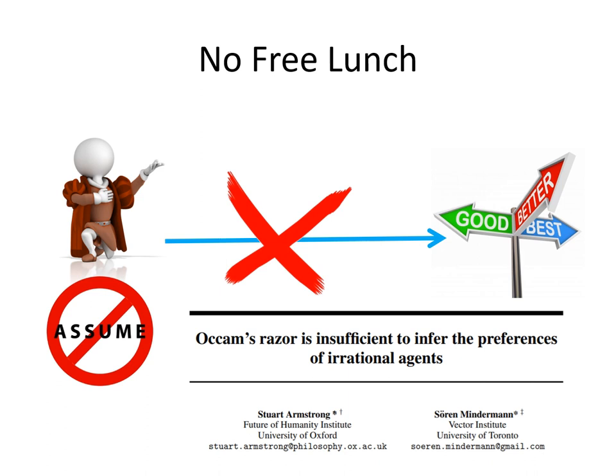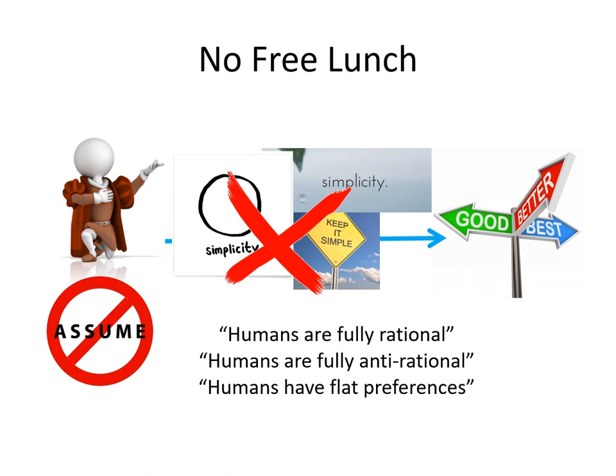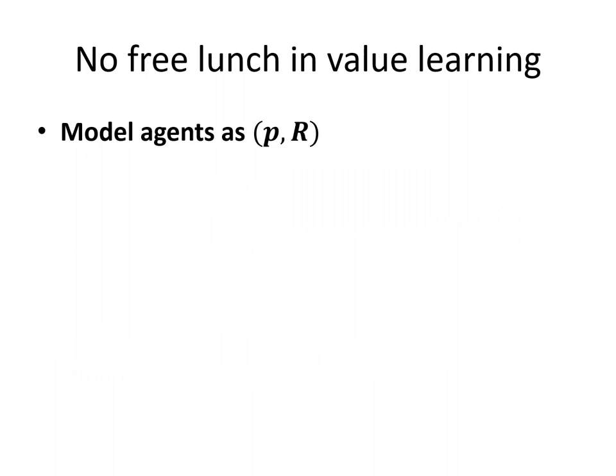No free lunch theorems are not normally that relevant because one applies a simplicity prior or regularization and then they go away. However, here simplicity priors don't help. In fact, they make it worse. The three simplest explanations of human behaviors are that humans are fully rational all the time, humans are fully anti-rational, or humans have flat zero preferences. It doesn't matter too much what form of simplicity one uses — I tend to use Kolmogorov complexity, but one can also use Kolmogorov complexity plus program runtime, and one gets sensibly the same results.